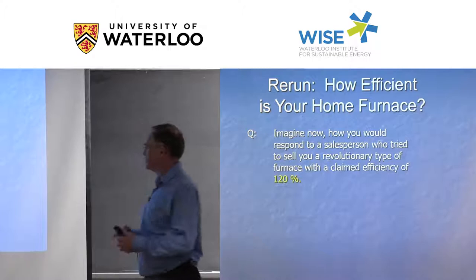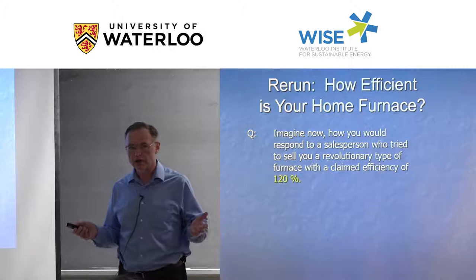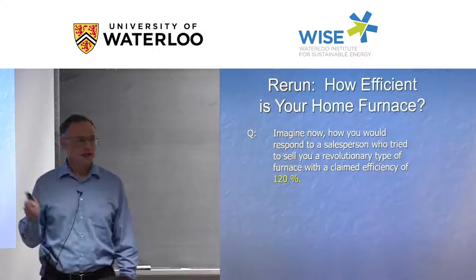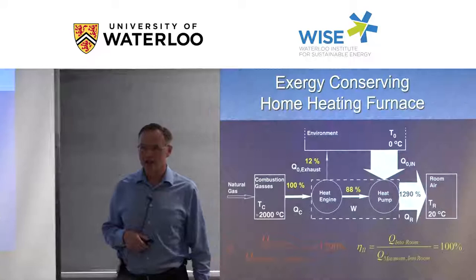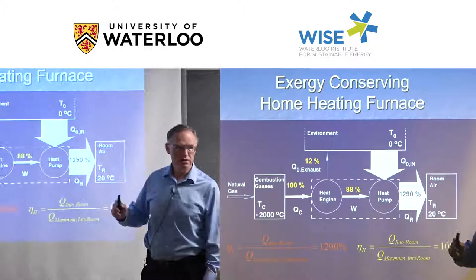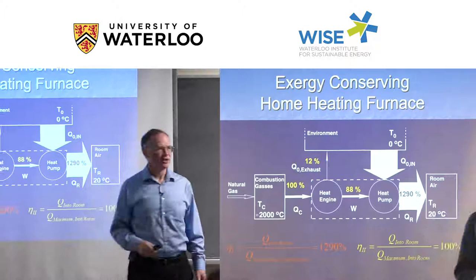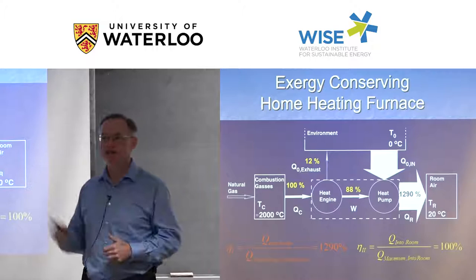Now, imagine responding to a salesperson who claimed to sell a revolutionary furnace that is 120% efficient — and who claimed he bought the pieces at Canadian Tire. Those who understand exergy would say: no problem, it can be done. It involves a heat pump and a heat engine. A power plant combined with a heat pump can easily achieve 120% efficiency. The reason this isn't everywhere is it's more complicated, which means higher maintenance and lower resilience.